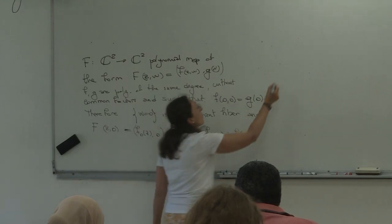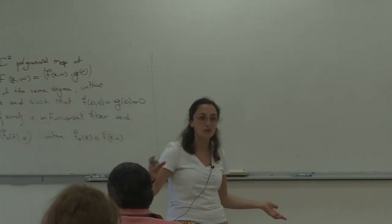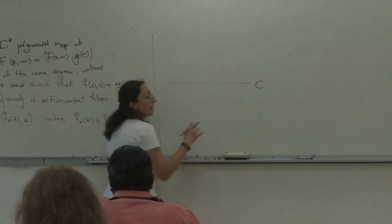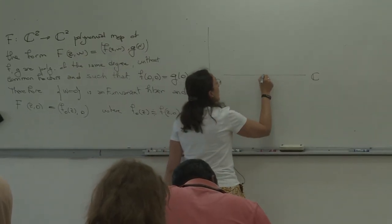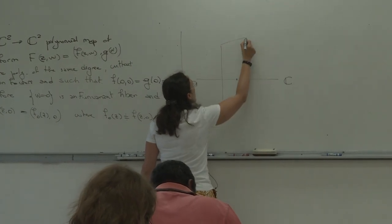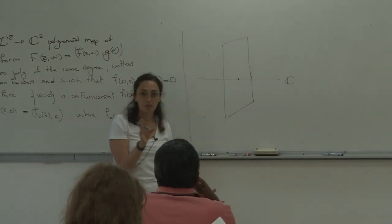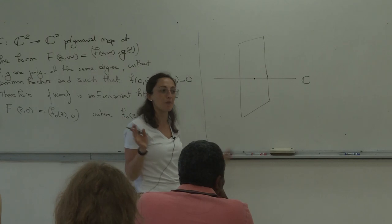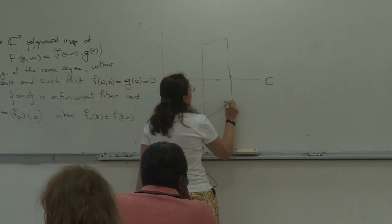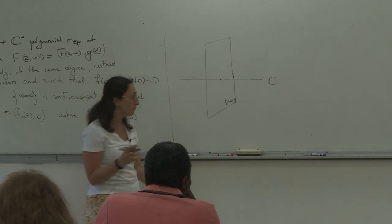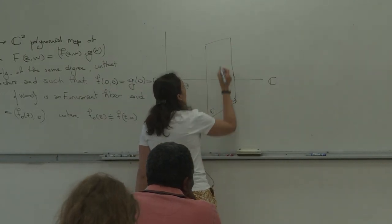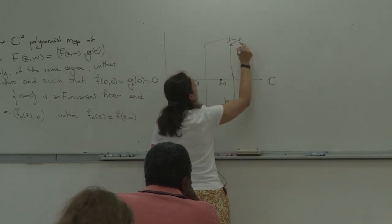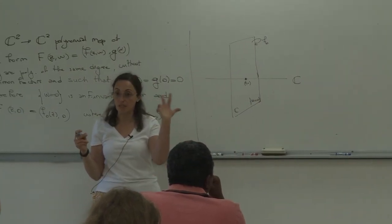So the questions we had — I'm not going to rewrite them — in here we had this line, which is the w line. We had the point 0 in here, and this is a bad picture because I'm trying to picture C⁴ on R². This is the best I am able to do. So this is my w equal to 0 fiber. It's a vertical fiber, it's a copy of C, and on this C I have the origin, which is fixed.